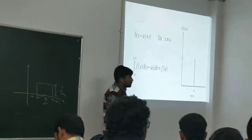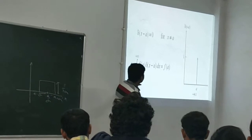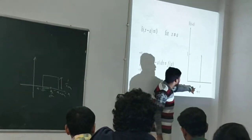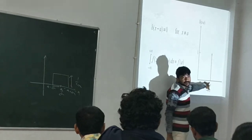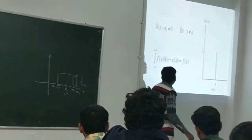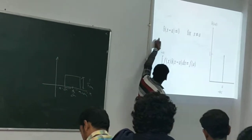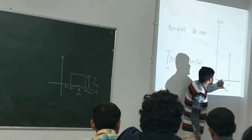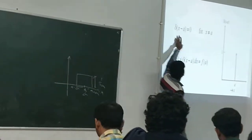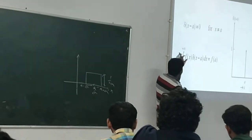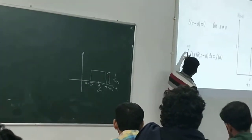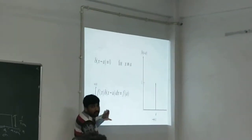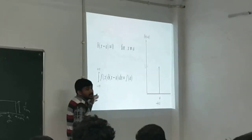This is one of the properties of the delta function. Now, the delta function is represented graphically as a spike at X equals A. The important properties are: delta of X minus A equals 0 when X is not equal to A. And the integral from minus infinity to plus infinity of delta of X minus A dx equals 1. With these conditions, the delta function is fully defined.